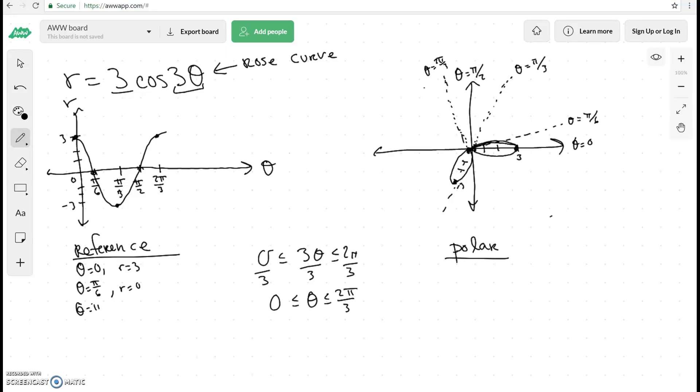Theta equals pi over 2. We said that the radius was equal to 0. And theta equals 2 pi over 3. My radius in this case is going to be 3. Okay, so 1, 2, 3. Okay, it's going to look something like this.